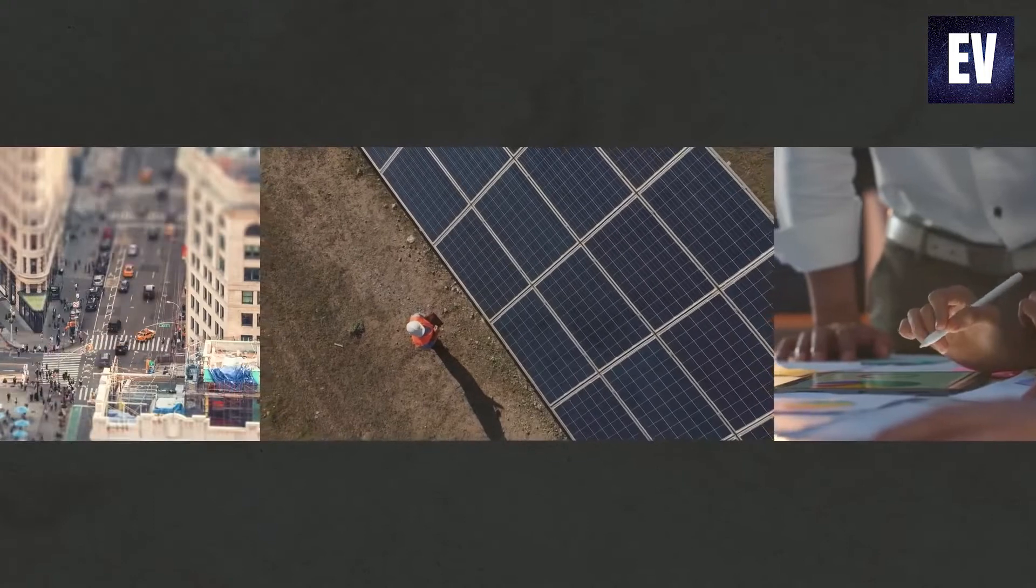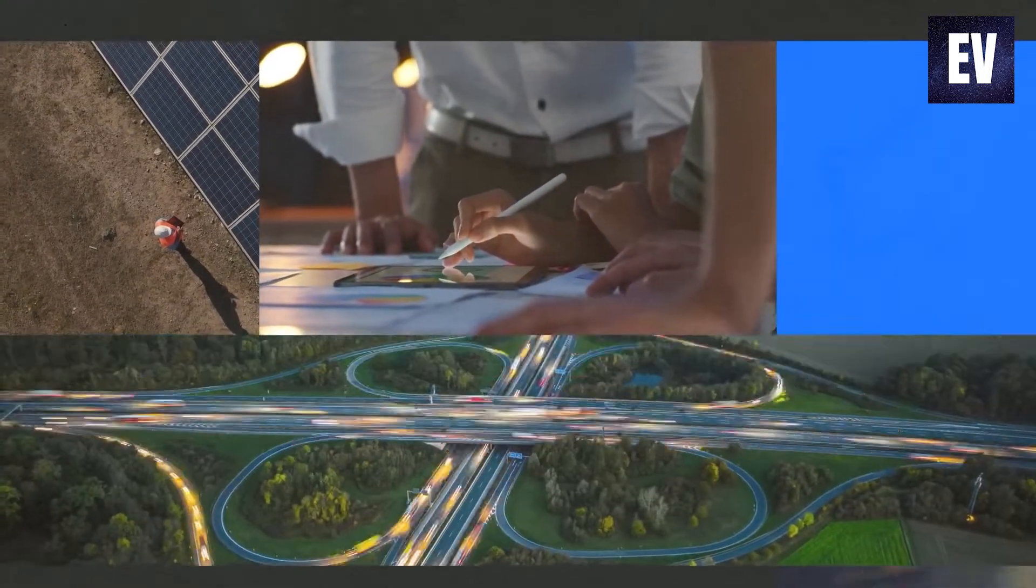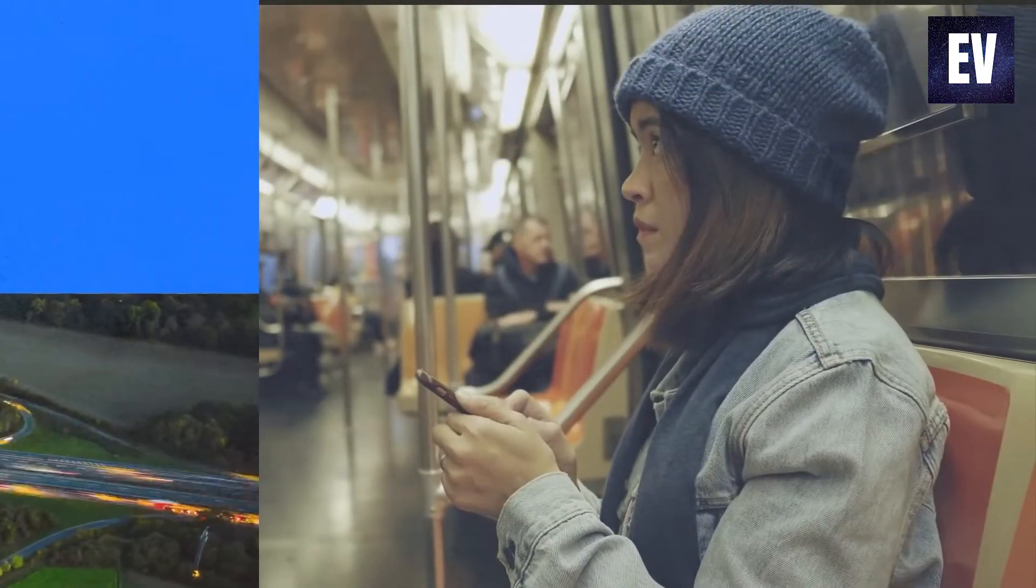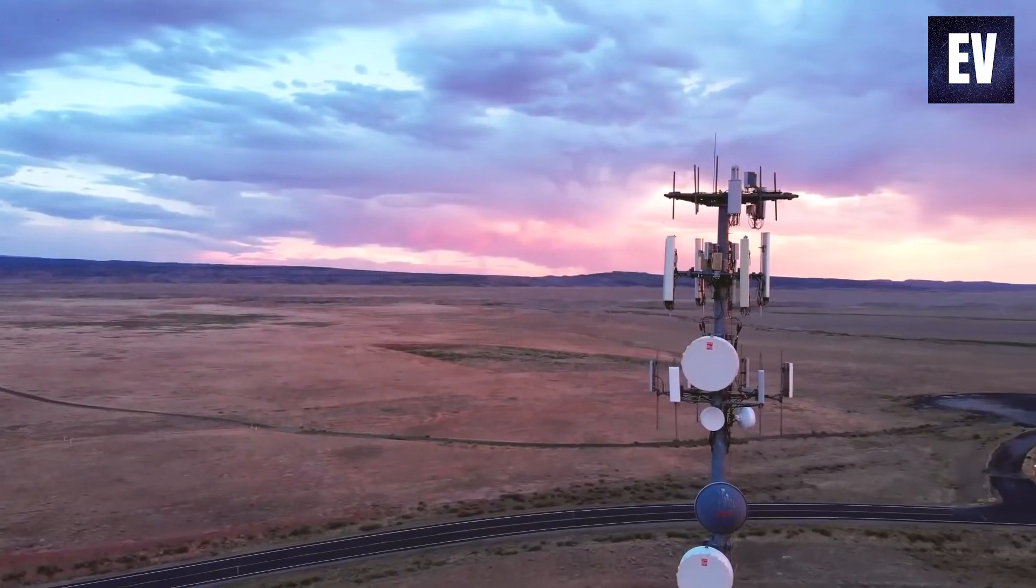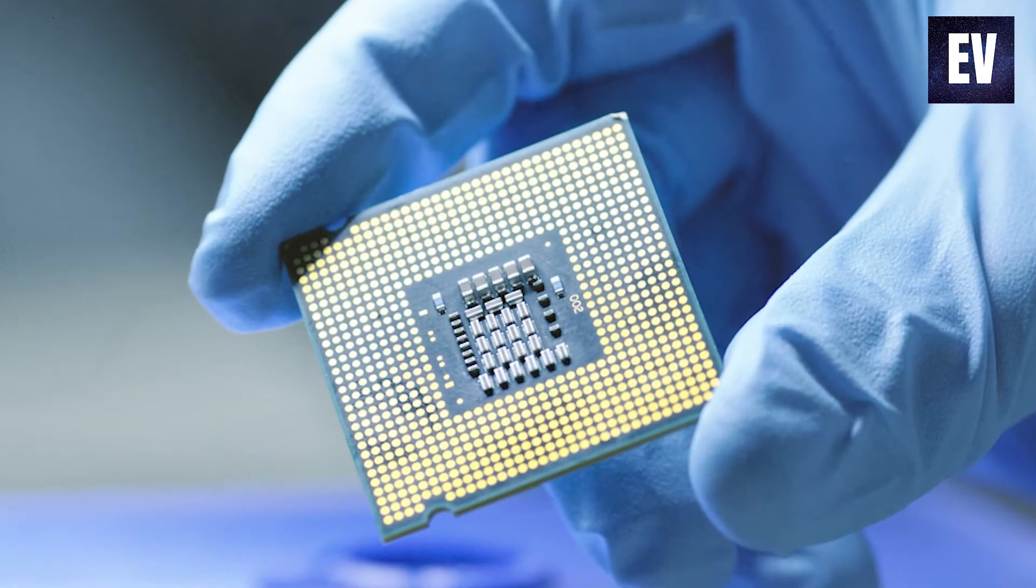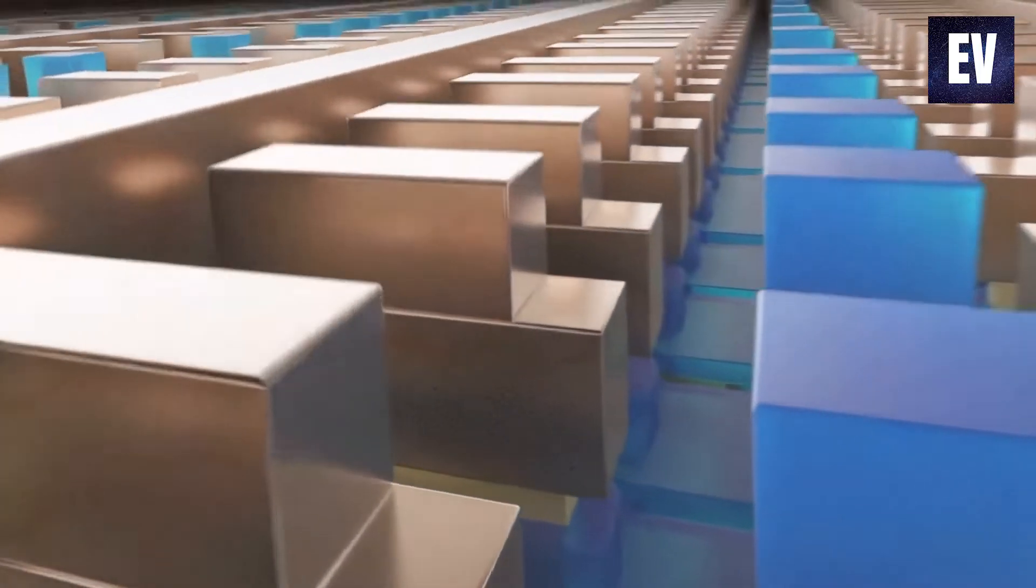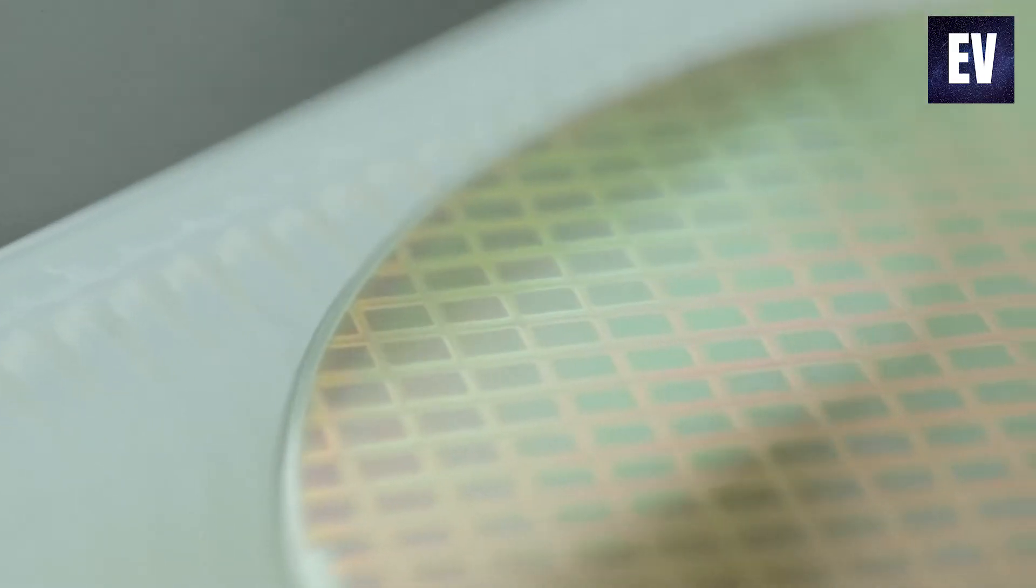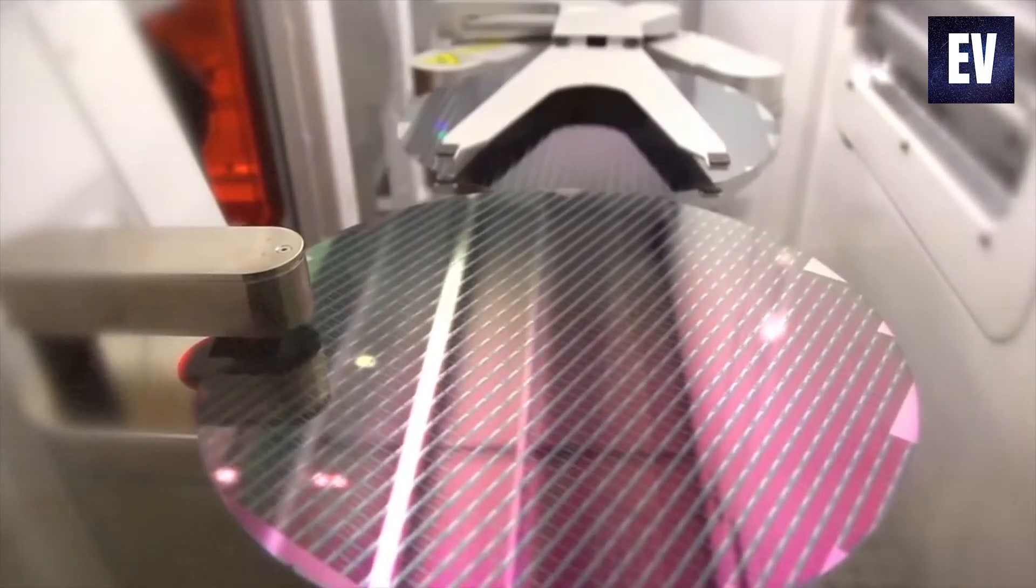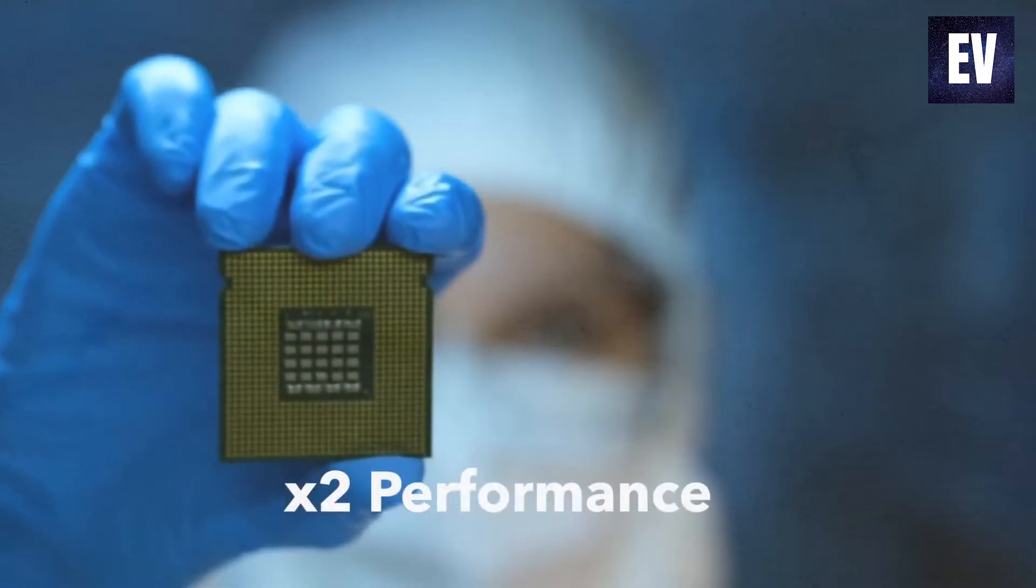Whether it's in computing, appliances, transportation systems, communication devices, or essential infrastructure, semiconductors play a critical part in everything. When it comes to improving the performance of a chip, increasing the number of transistors, the primary operating units that process information without increasing the overall size of the device, is the most efficient method of doing so.